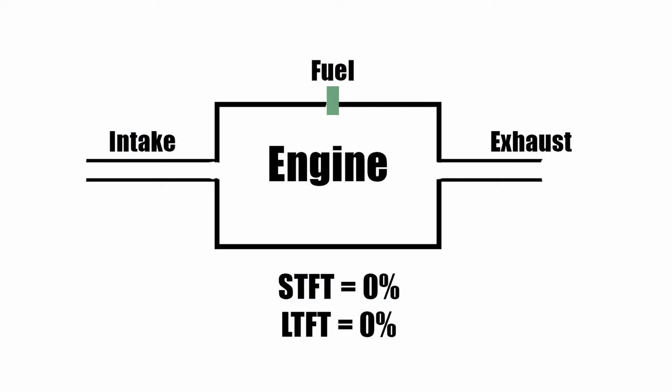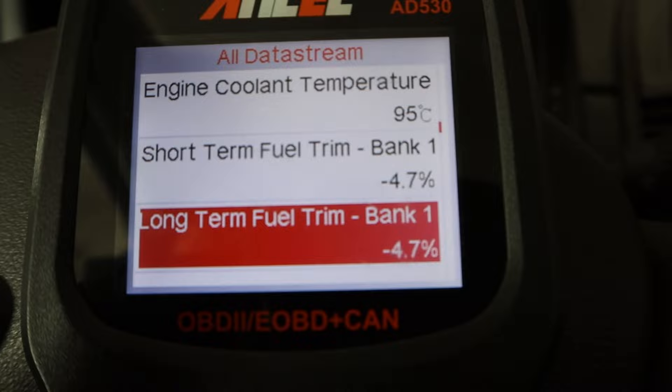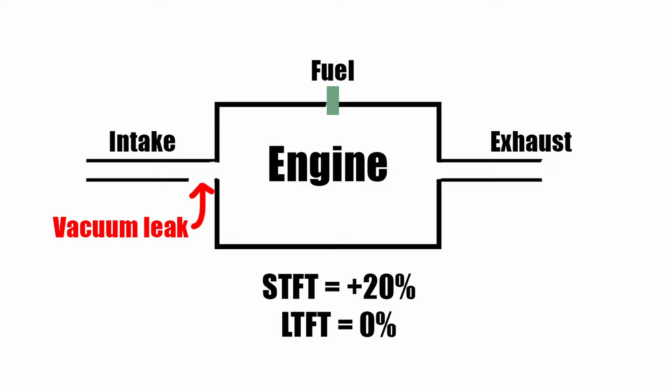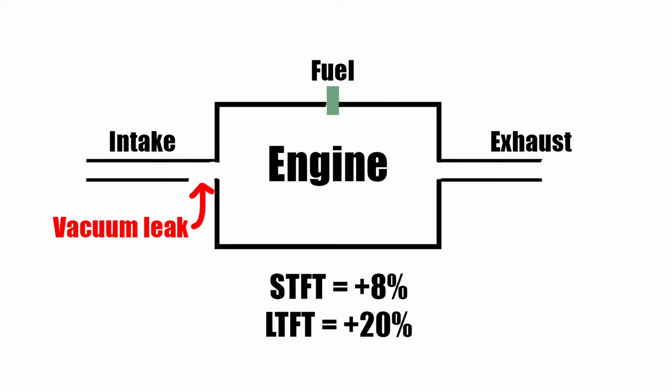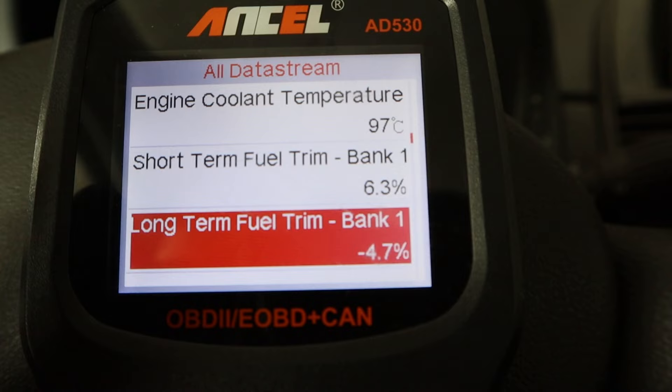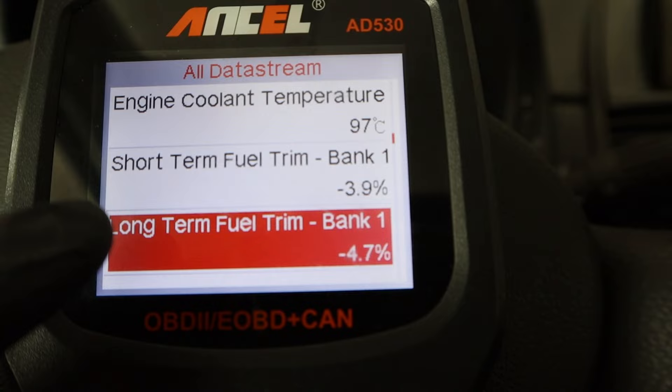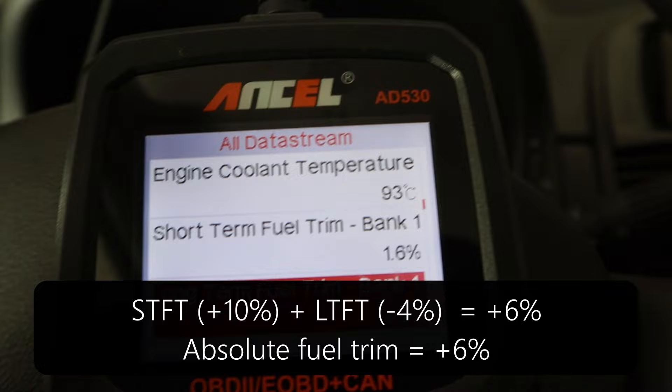On the other hand, if you see minus ten percent, that means your engine is reducing the fuel amount by ten percent. Generally for short-term fuel trim, you want to see from minus 10 to plus 10 percent. If you see more than that, you have some kind of issue. Long-term fuel trim works the same way but differently in practice — for example, with a vacuum leak your short-term fuel trim will jump to twenty percent, and when the long-term fuel trim sees that you need twenty percent of fuel to achieve stoichiometric ratio, it increases to twenty percent.